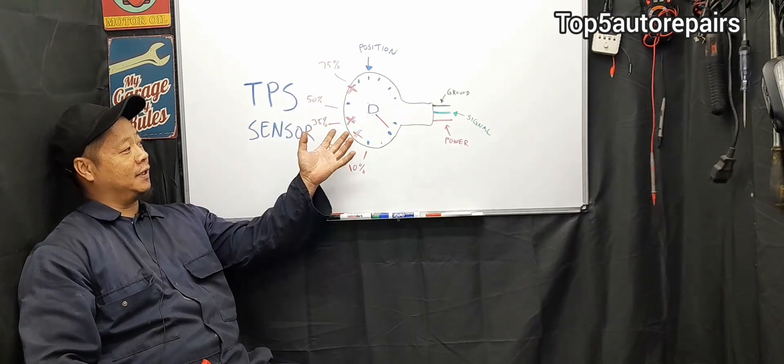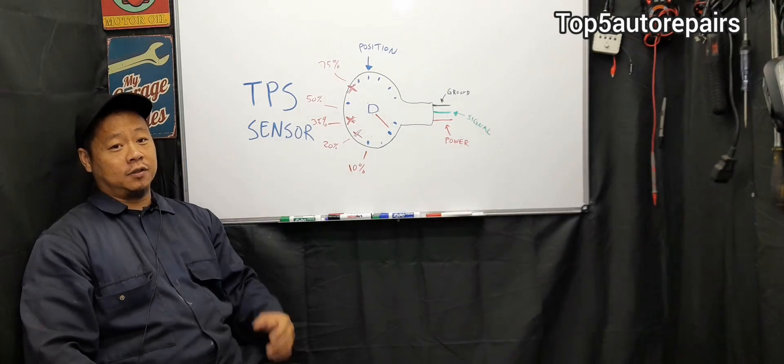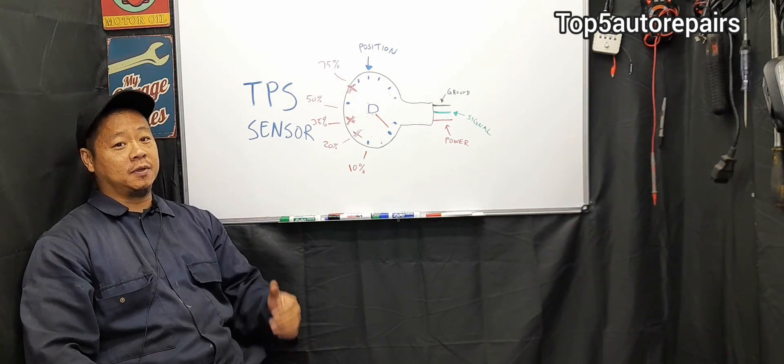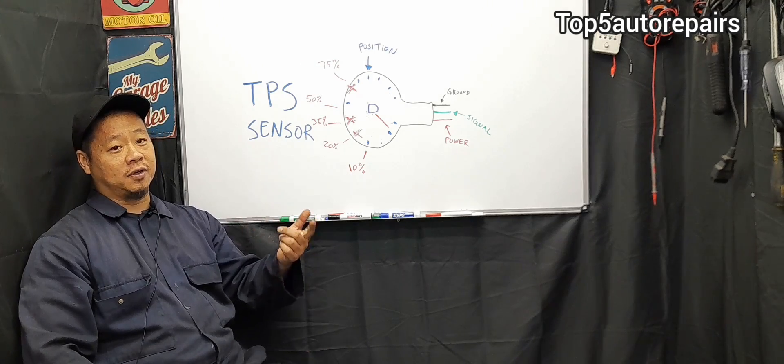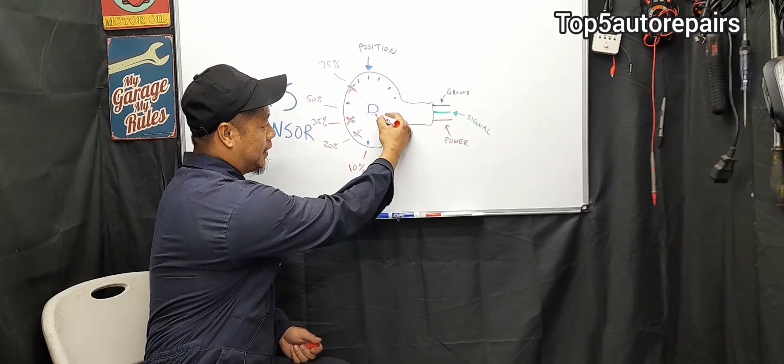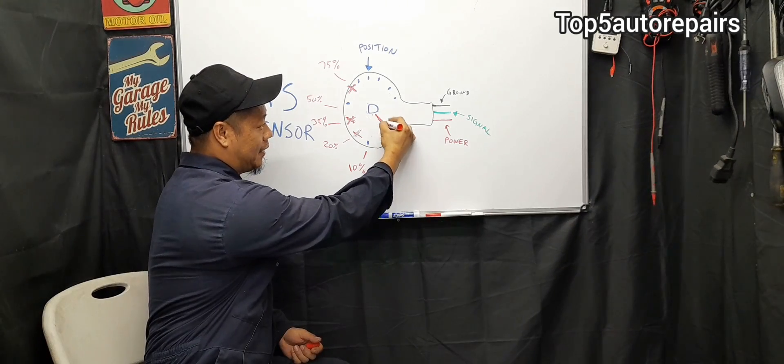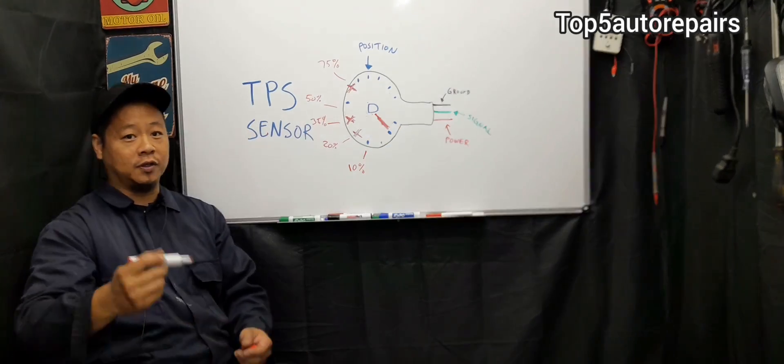When you have a failing TPS due to worn contact points, or you have a connection issue, you're going to notice all sorts of symptoms. For example, you're going to notice a check engine light turning on, you're going to get some sort of TPS codes. You're going to have rough idle, because maybe this part here is worn, and it cannot really maintain a proper signal going to the computer.